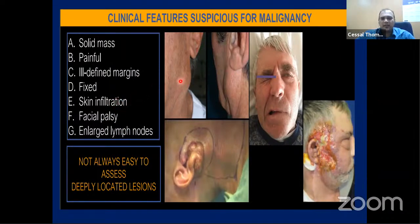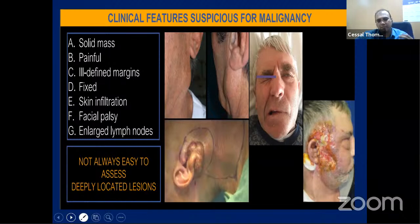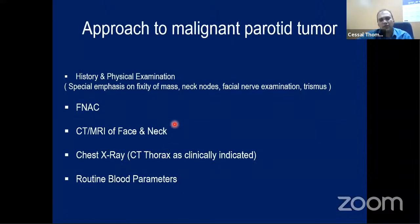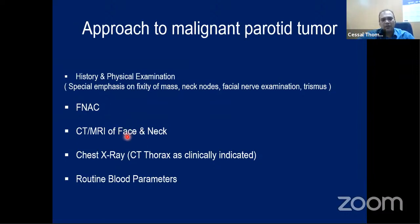Proper clinical history and examination are required to form a working diagnosis: am I dealing with a benign or malignant tumor? Then proceed to investigations - ultrasound, and if malignancy is suspected, FNA. The imaging of choice for a parotid tumor is MRI of the face and neck. CT thorax and PET-CT are not routinely recommended. Routine blood work and chest X-ray are sufficient otherwise.